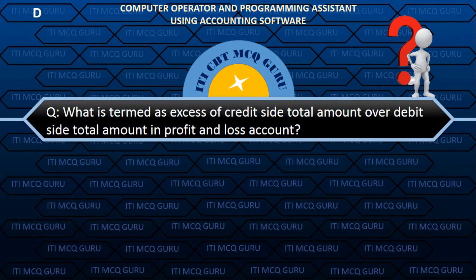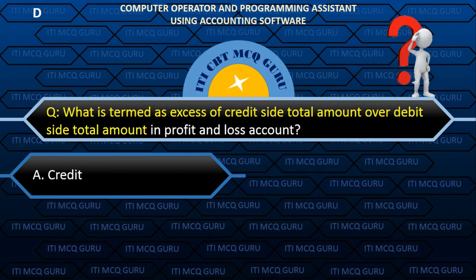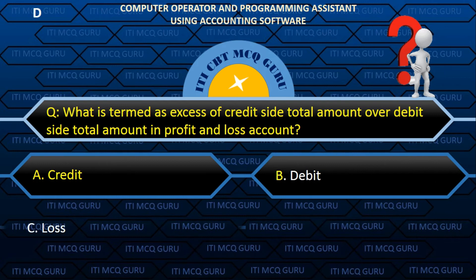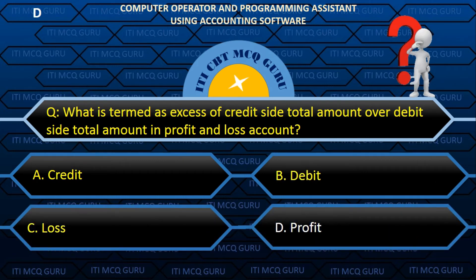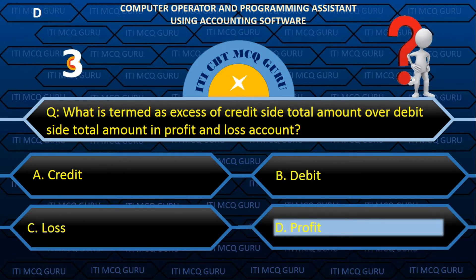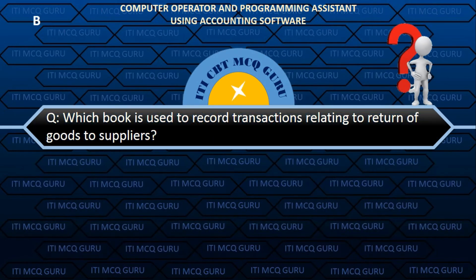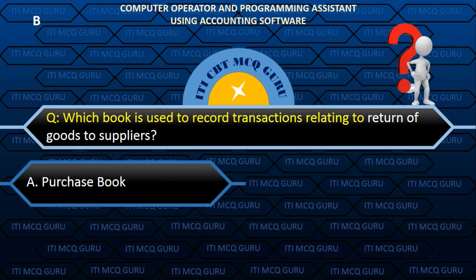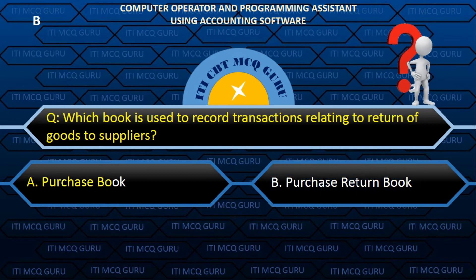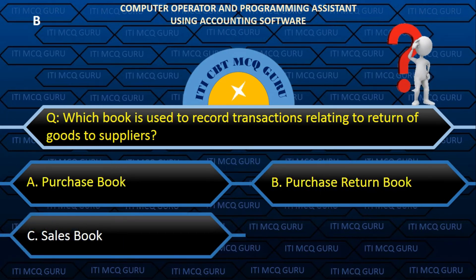What is termed as excess of credit side total amount over debit side total amount in a profit and loss account? D. Profit. Which book is used to record transactions relating to the return of goods to suppliers? B. Purchase return book.